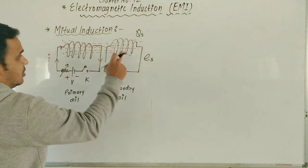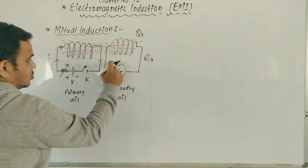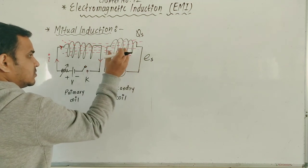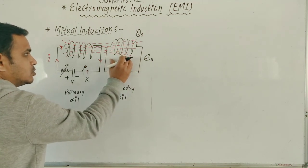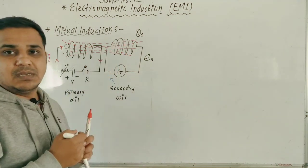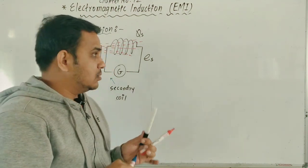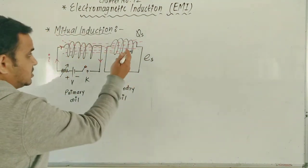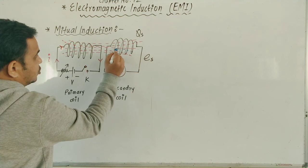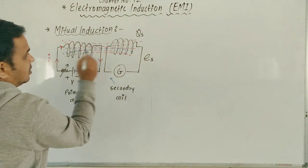When EMF is induced in this coil, current will also be produced in it, and when current is produced in the secondary coil, magnetic lines will also be formed in the secondary coil — and because of these magnetic lines, they are also linked to the primary coil.